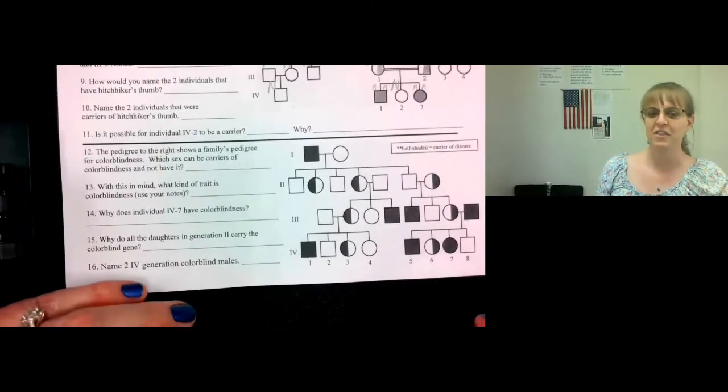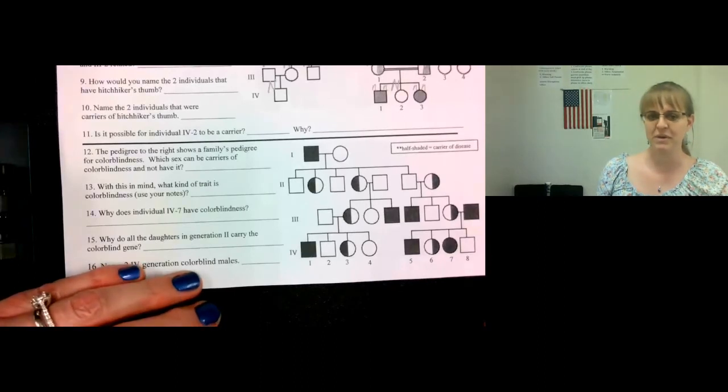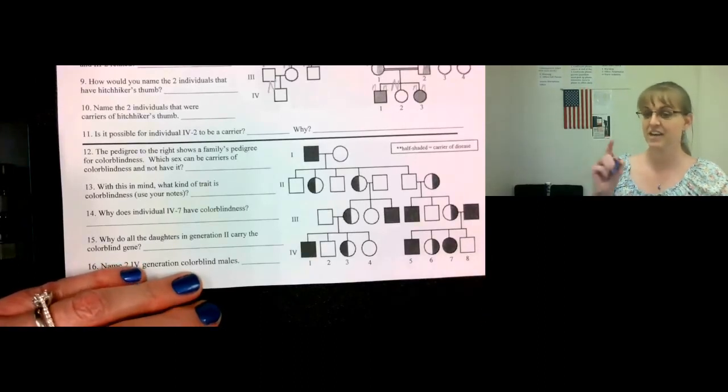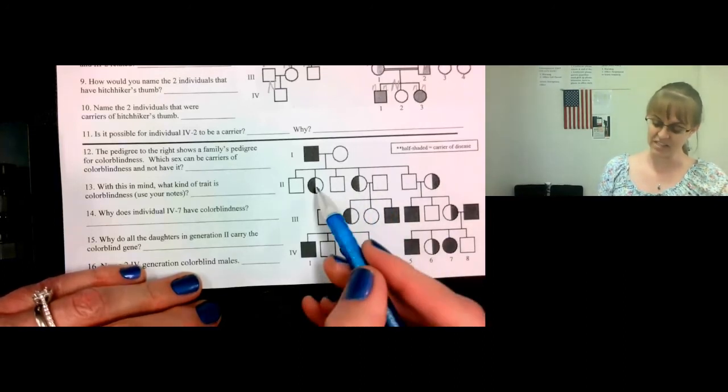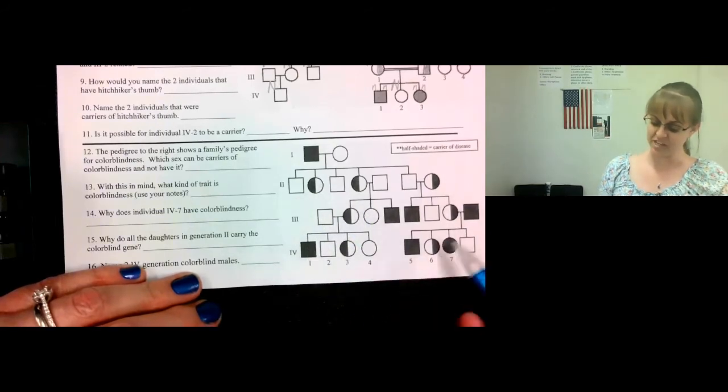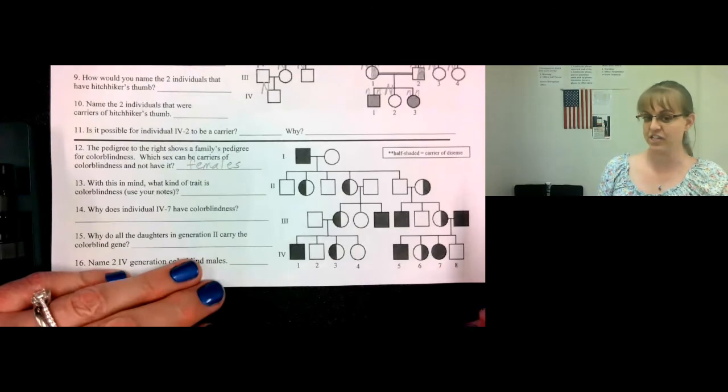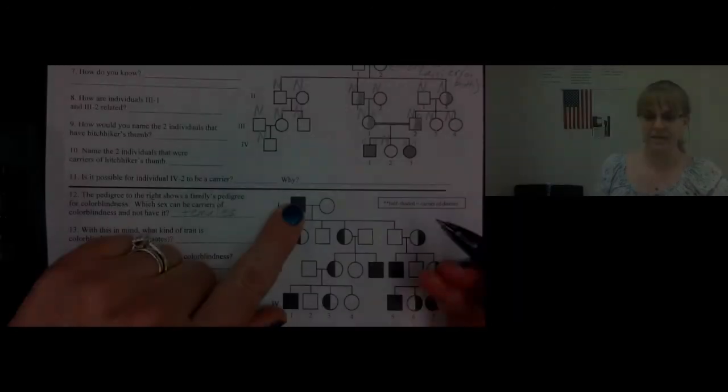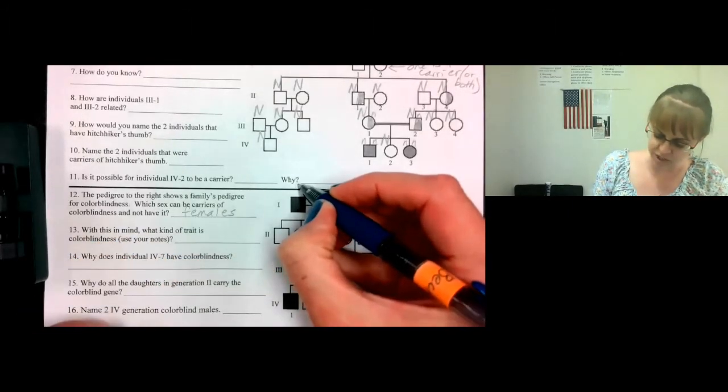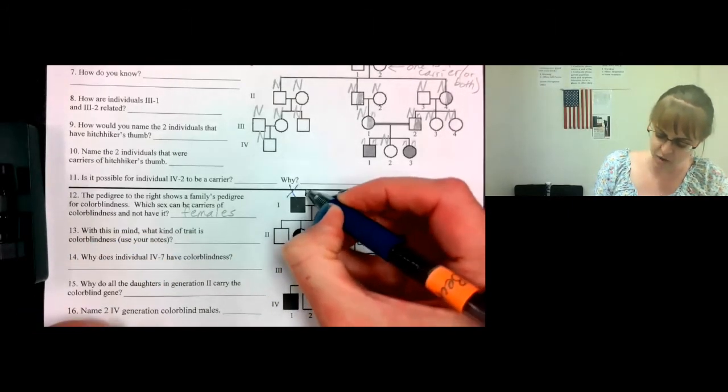Number 12. The pedigree to the right shows a family's pedigree for colorblindness. Colorblindness is a sex-linked trait. Which sex can be carriers of colorblindness and not have it? Well, obviously, the females can carry it. Males either have it or they don't. Let's go through and figure out the genotype for all of these individuals. Okay, this is a guy, so his chromosomes are definitely XY.